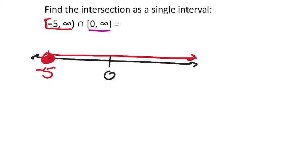The next one, starting at 0, so that would be a closed circle because it's a square bracket. And yeah, this one also goes to infinity. So this one, hopefully you can see those two colors there.